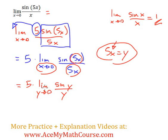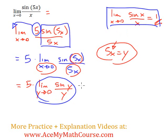So we've got 5 times the limit as y approaches 0 of sine of y over y. This corresponds directly to what we had here, and that's just equal to 1. So we just have 5 times 1, which is 5. That's it.